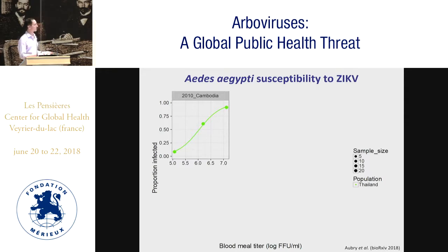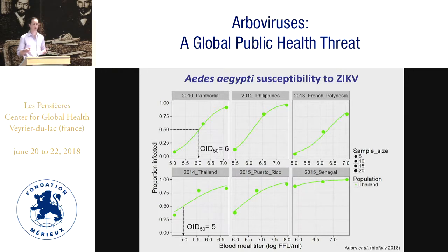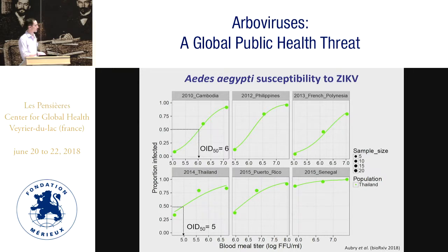We established dose-response curves for each population and each virus — for example, for a population from Thailand exposed to the Cambodia virus. The dose response represents the percentage of infected mosquitoes as a function of the titer of virus in the blood meal, with an increase in infected proportion as titer increases. We derived the 50% oral infectious dose (OID50), an absolute measure of susceptibility. For example, the OID50 for the Cambodia virus was 6 logs, whereas it was 5 logs for the Thailand virus.